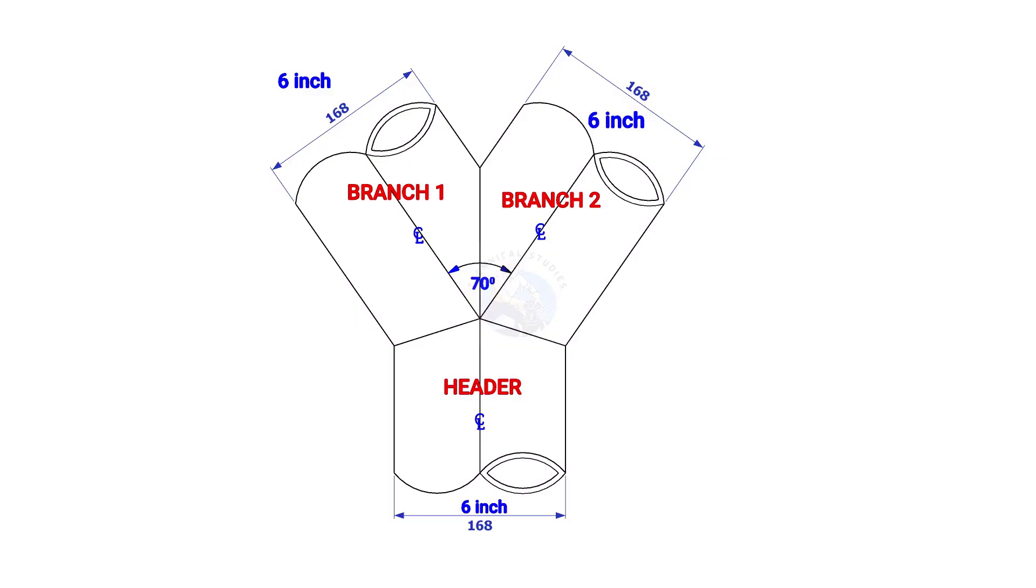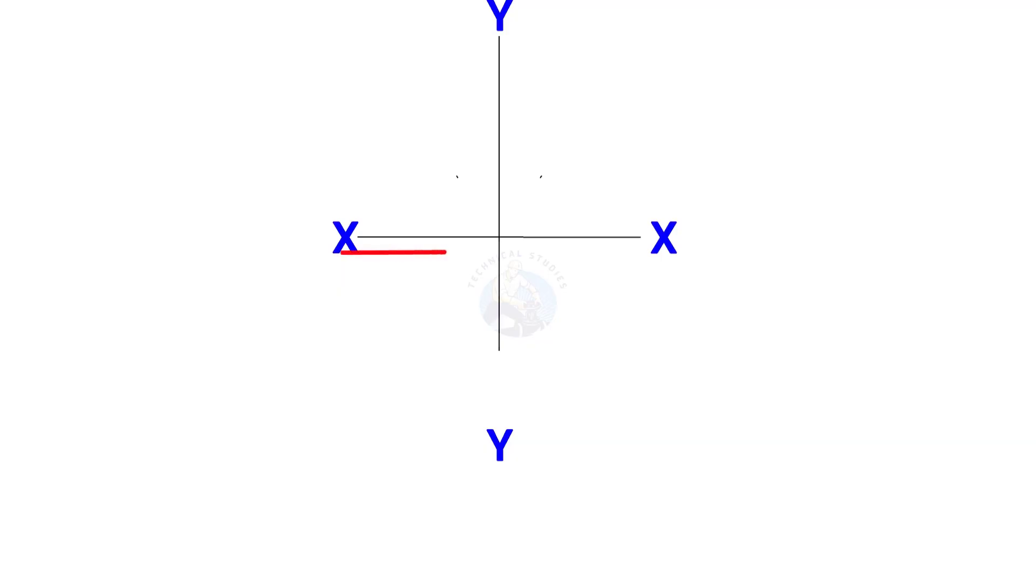The size of the Y branch in this example is 6 inches and the including angle is 70 degrees. Draw line XX and its perpendicular line YY.